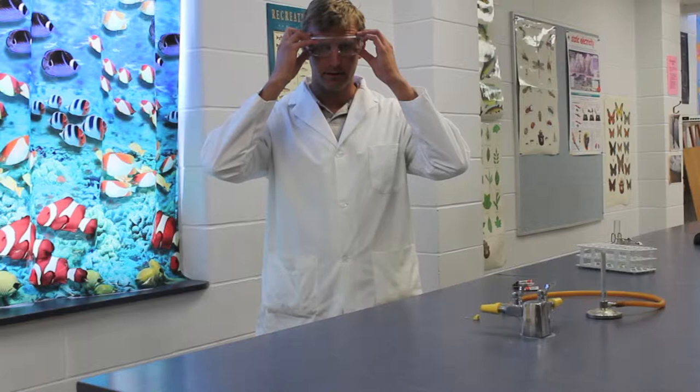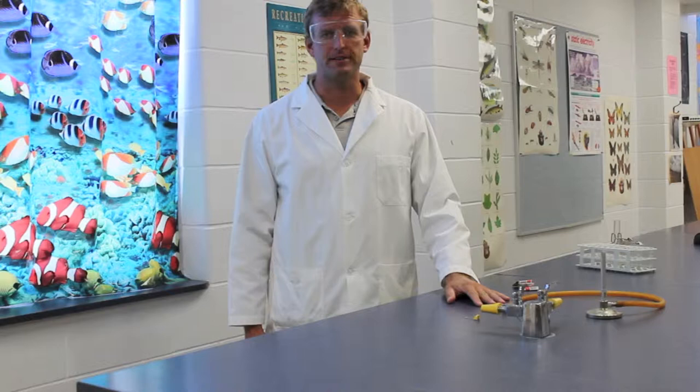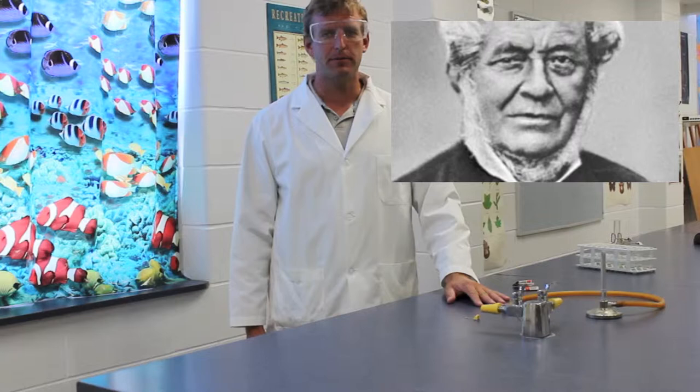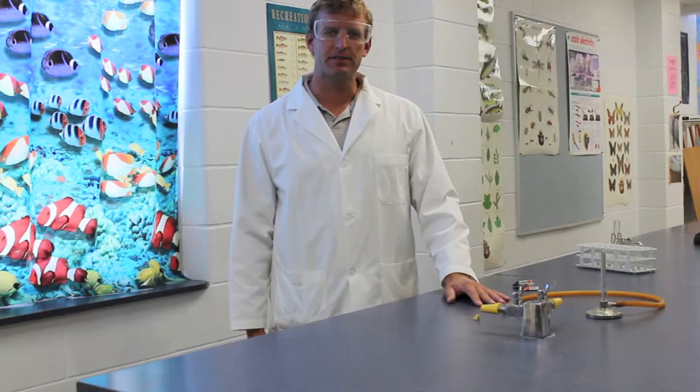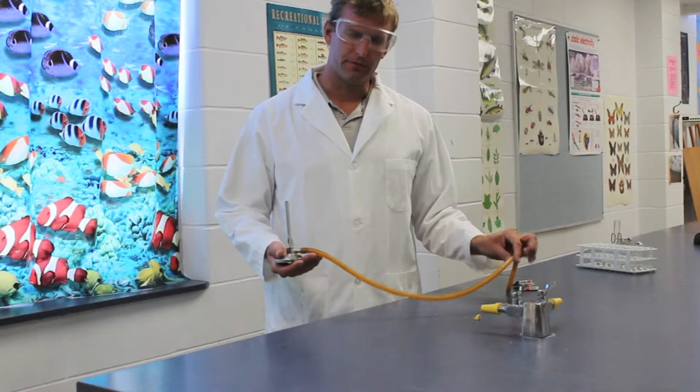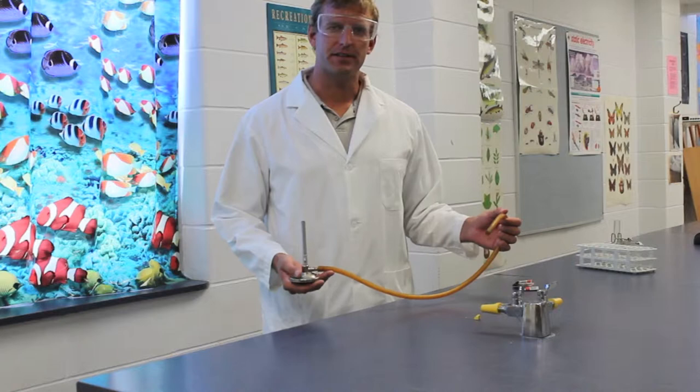The Bunsen burner is an essential part of the high school science laboratory. It was invented in the 1850s by a fellow named Robert Bunsen, who wanted to create a controlled, sootless flame for use in his science laboratory. The Bunsen burner is used for sterilization, heating, and combustion of different goods in the science laboratory.